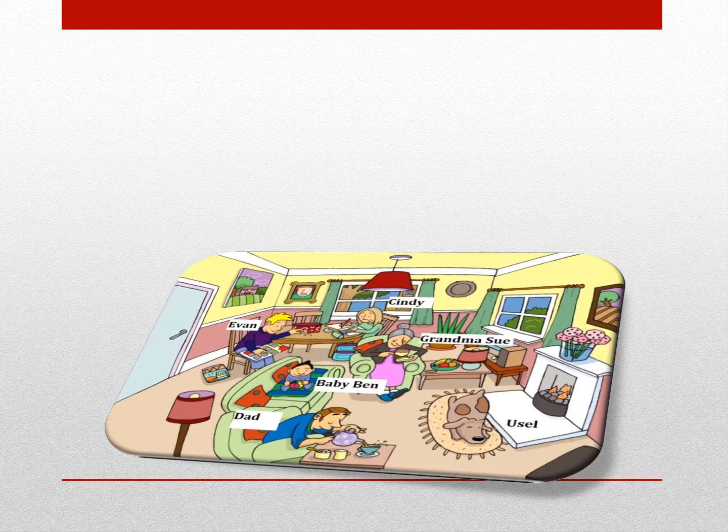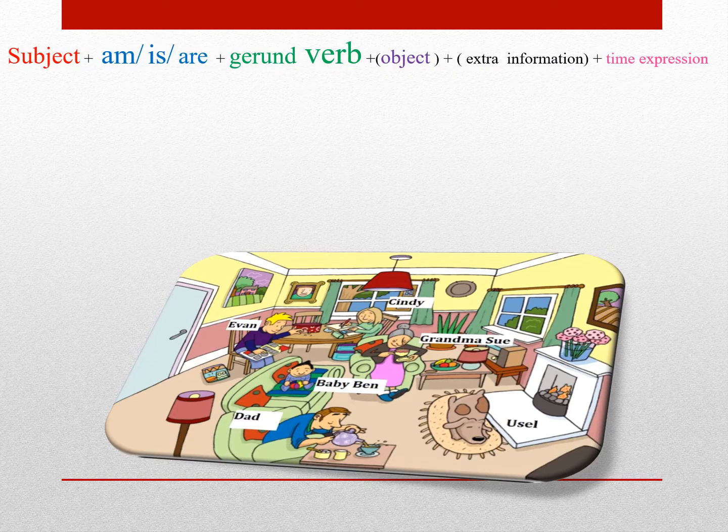برای ساختار Present Continuous باید Subject داشته باشید به اضافه با توجه به Subject یکی از افعال کمکی Am، Is یا Are. اگه Subject هست I مسلماً I Am، اگه Subject He، She یا هر Subject مفردی باشه Is، اگه Subject They، We یا هر Subject جمعی باشه Are. بعدش به اضافه یه Gerund Verb، یعنی فعلی که حالت ing میگیره. بعد Object که Optional است، و Extra Information.